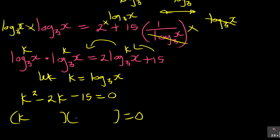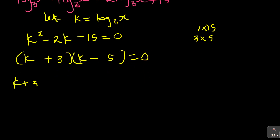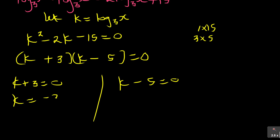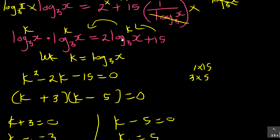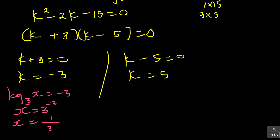Rearranging: k² - 2k - 15 = 0. Factorizing — we need factors of 15: 3 × 5. The bigger number is negative, so: (k + 3)(k - 5) = 0. Therefore k = -3 or k = 5. Recalling that k = log₃(x): for k = -3, log₃(x) = -3, so x = 3^(-3) = 1/27.